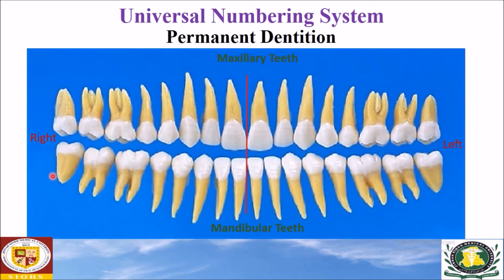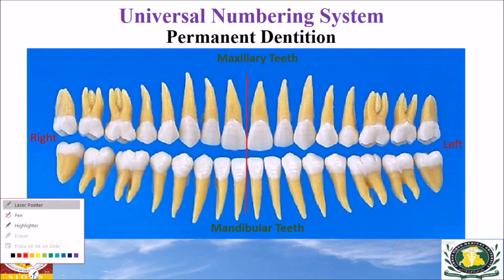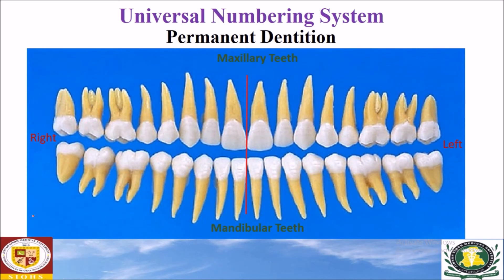Now we will do exercises on the permanent dentition. This tooth is the right maxillary canine — a pointed tooth. In the universal numbering system, this tooth is numbered as number 6.